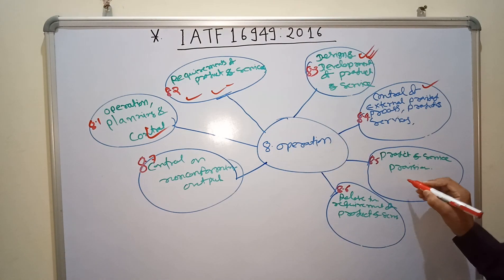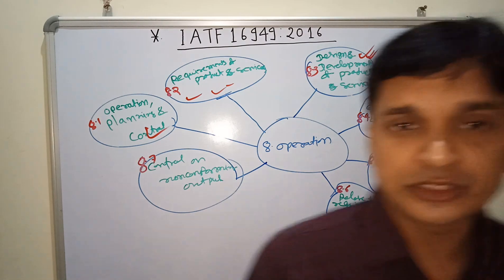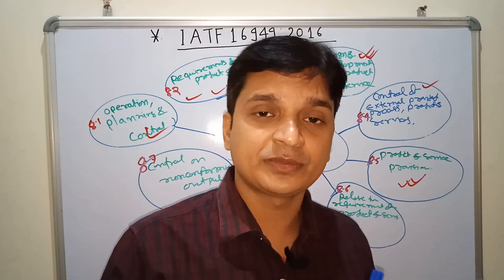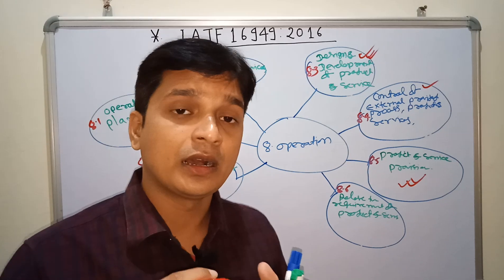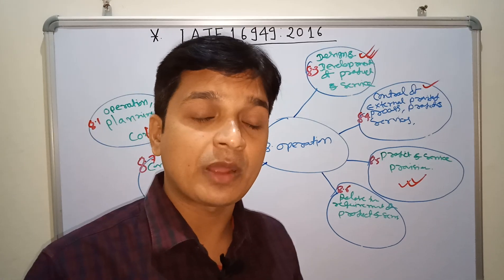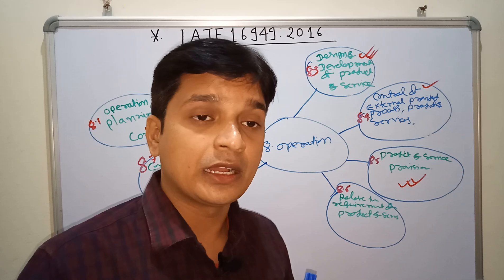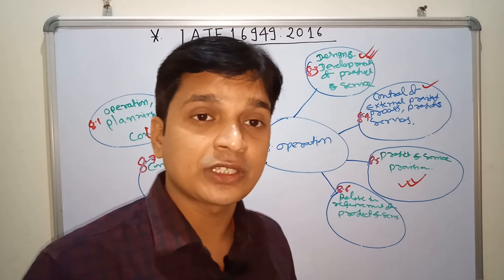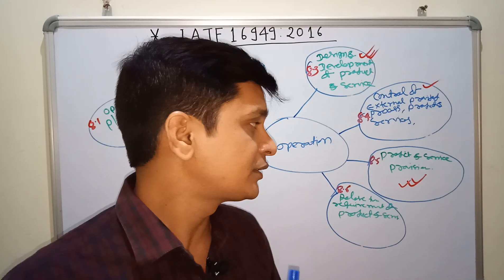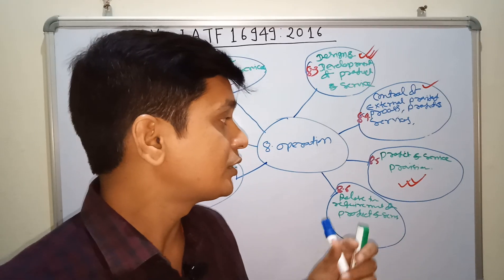Sub-clause 8.5 is Product and Service Provision. This clause basically deals with job setup requirements, work instructions (WI), work standards, standardized work processes, and related items. Note that the control plan is not included in this sub-clause.